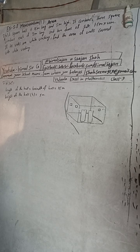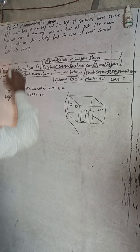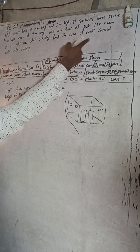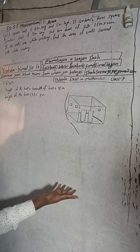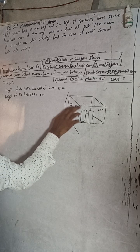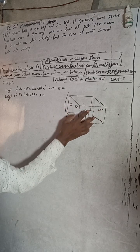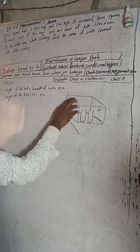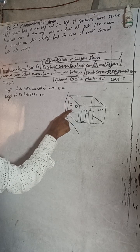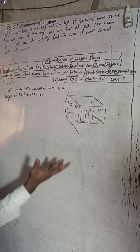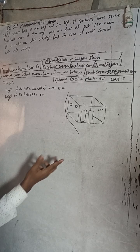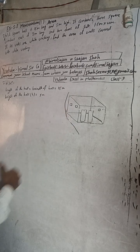If its walls are to be whitewashed, find the area of walls covered with whitewashing. There are three windows and two doors, so whitewashing will be done only excluding the windows and doors, because whitewashing is not done on doors and windows. We will first calculate the four walls area using the four walls formula.